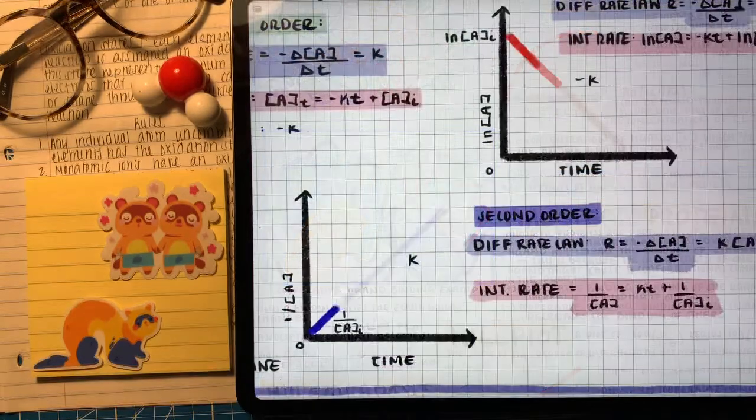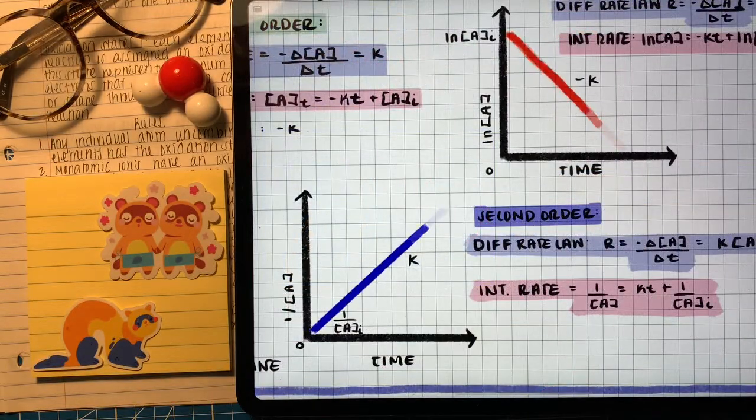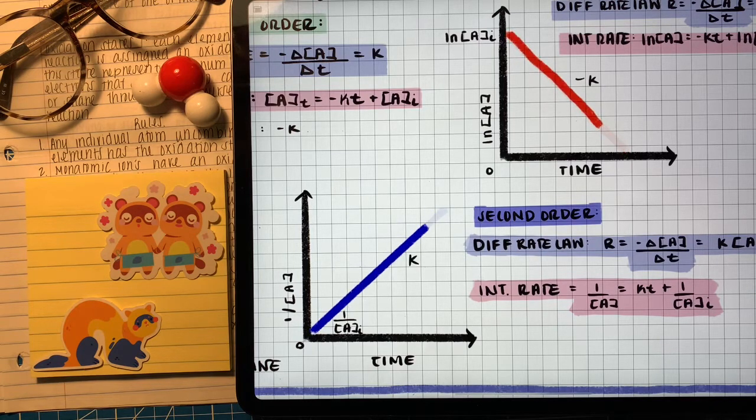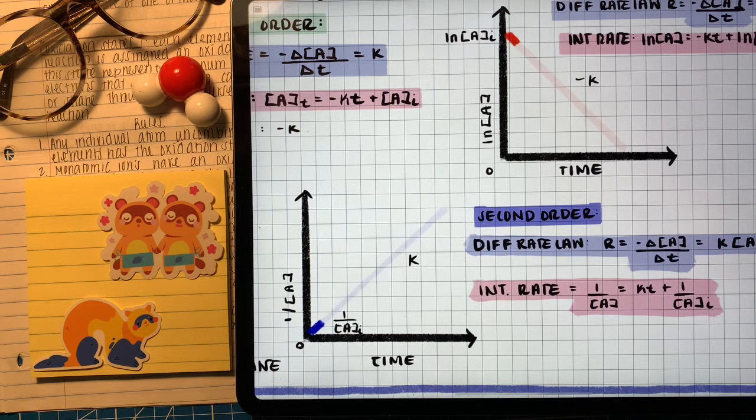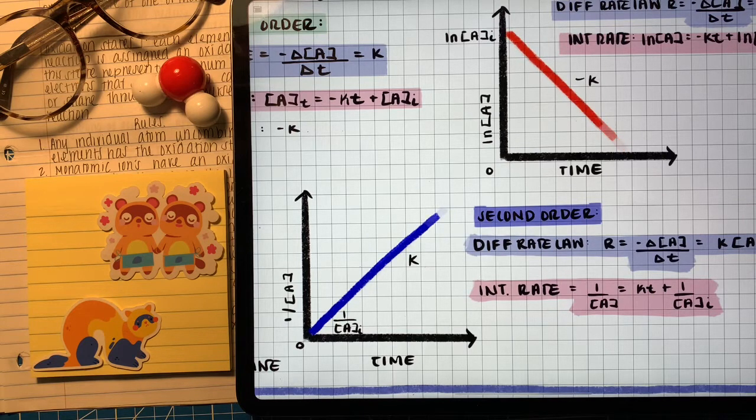So when talking about integrated rate law in my opinion the second order is the most difficult because we know that the concentration in a second order reaction has such an overall impact on the rate of the reaction. I know it's slightly cut off but for the differential rate law the equation is the rate equals the rate constant times the concentration of A squared.